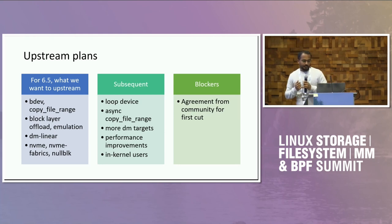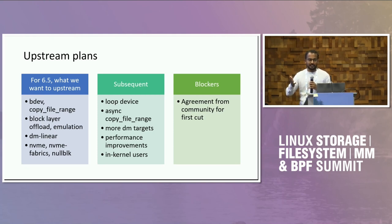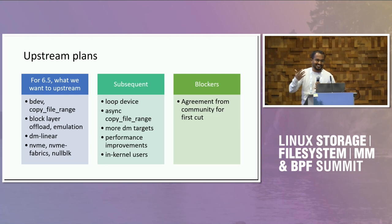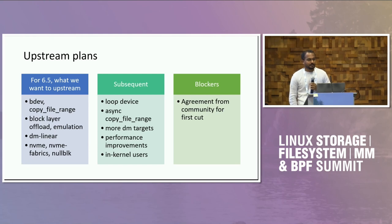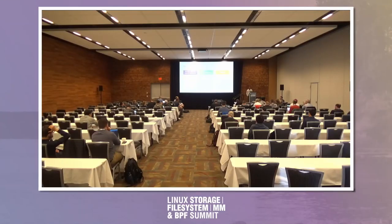We'd like to know if things are going in the right or wrong direction — at present there's not much clarity. An audience member asks: if you have the bdev copy_file_range, why do you need anything special in DM linear? Why are you trying to push DM linear specifically?